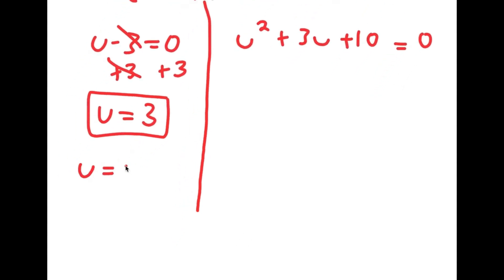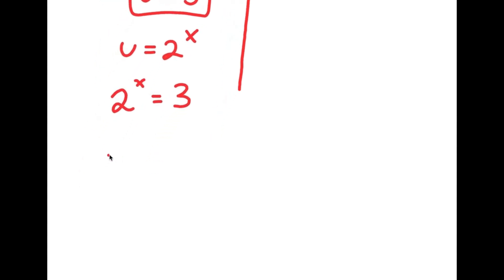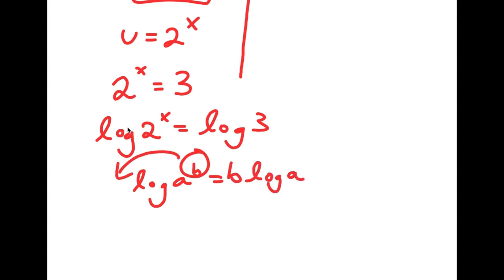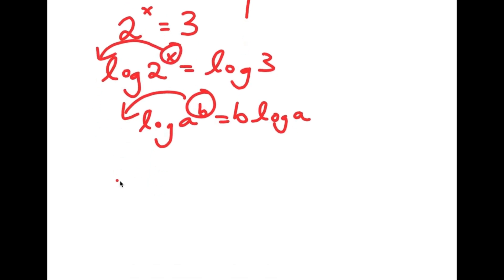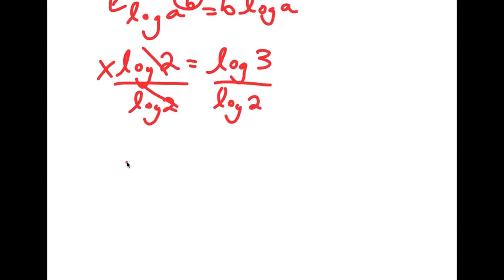Remember, we let u equal 2 to the power of x, meaning 2 to the power of x equals 3. To solve this, I take the log on both sides: log of 2 to the power of x equals log 3. Using the power rule, I move the exponent x to the front, giving x times log 2 equals log 3. Dividing both sides by log 2, I get x equals log 3 over log 2.